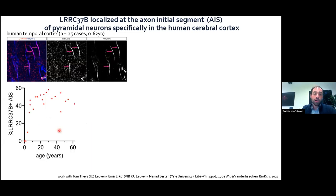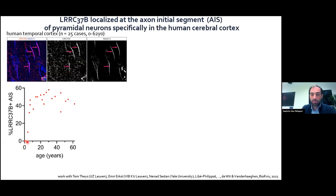I performed this staining of LRC37B co-localization with AnkG in individuals from birth to more than 60 years old, and looked at the proportion of axon initial segments positive for LRC37B. I cannot detect LRC37B in neonates. There is an increased proportion of positive AIS during childhood, and from puberty we have between 35 and 60% of AIS that are positive for LRC37B.